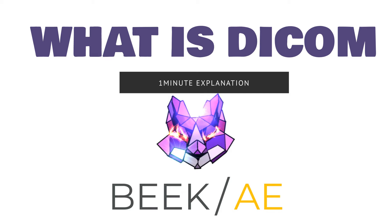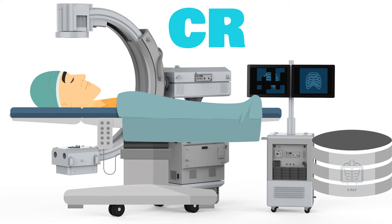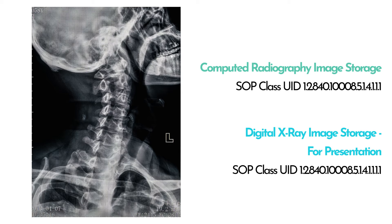Let's review a modern x-ray image. The x-ray is captured as a computed radiograph, CR, or a digital radiography image, DX. The x-ray is classified as a specific DICOM image type. This classification is called a SOP class.